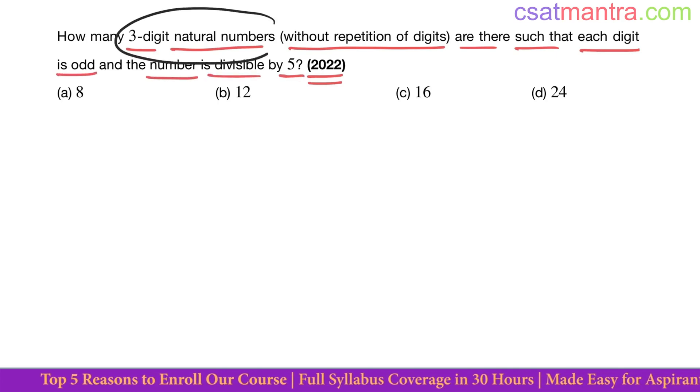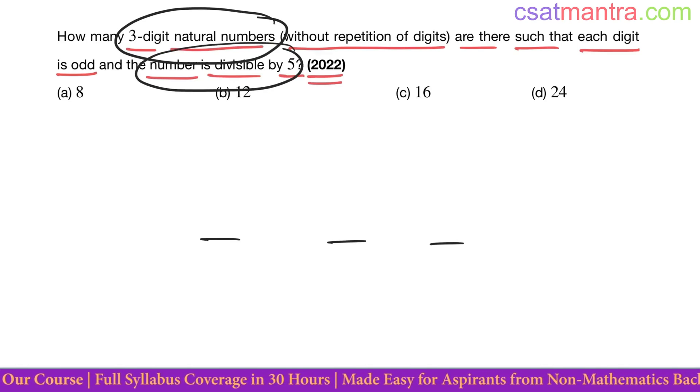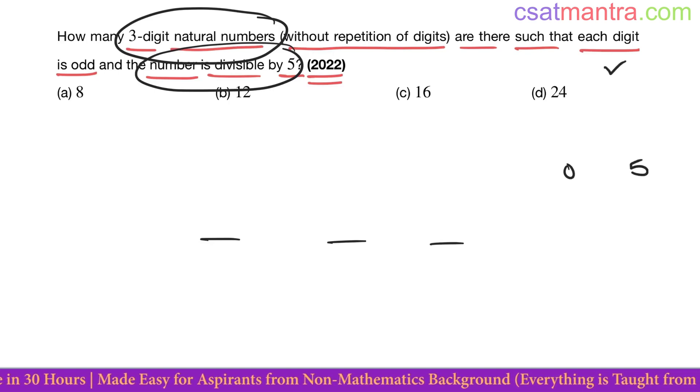Three-digit natural number. The number is divisible by 5. If a number is divisible by 5, the last digit should be 0 or 5. However, there is a condition given: each digit is odd.